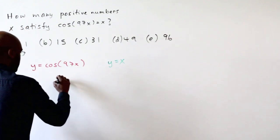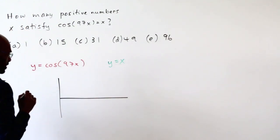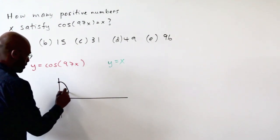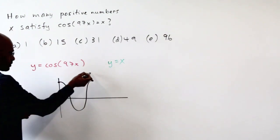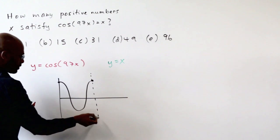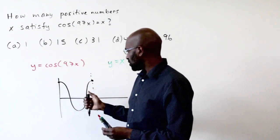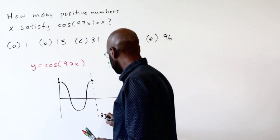So let's look just at one period of cosine 97x to get a sense of what it looks like. So it starts up here, goes down like this, and goes up to here. Alright, the period of cosine of x is 2pi, so the period of this is 2pi over 97.